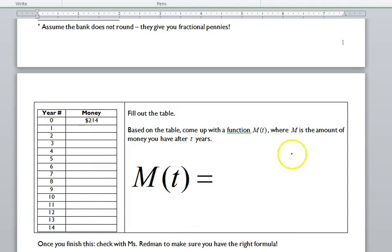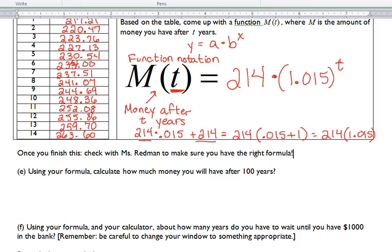And then, we need to see if we can come up with a model right here. So, fill in the table. You've got the first three. Keep going to year 14. And then, M of T is function notation for money after T years.